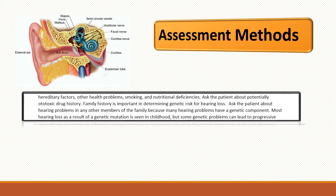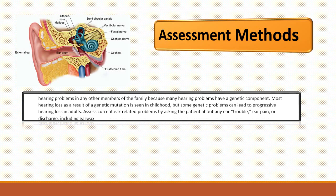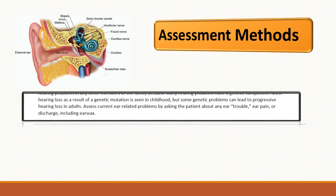You want to ask the patient about their potentially ototoxic drug history. Family history is important — ask the patient about hearing problems or any other problems a family member has had to assess the genetic component. Hearing loss from a genetic component is usually seen in childhood, but genetic problems can lead to progressive hearing loss in adults.